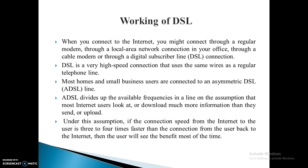About the working of DSL: when you connect to the internet, you might connect through a regular modem, through a local area network connection in your office, a cable modem, or through a Digital Subscriber Line connection. DSL is a very high-speed connection that uses the same wire as a regular telephone line. Most homes and small business users are connected to an Asymmetric DSL, i.e., ADSL line. Asymmetric DSL divides up the available frequencies on the assumption that most internet users download much more information than they send or upload. Under this assumption, if the connection speed from the internet to the user is 3 to 4 times faster than from the user back to the internet, then the user will see the benefit most of the time.